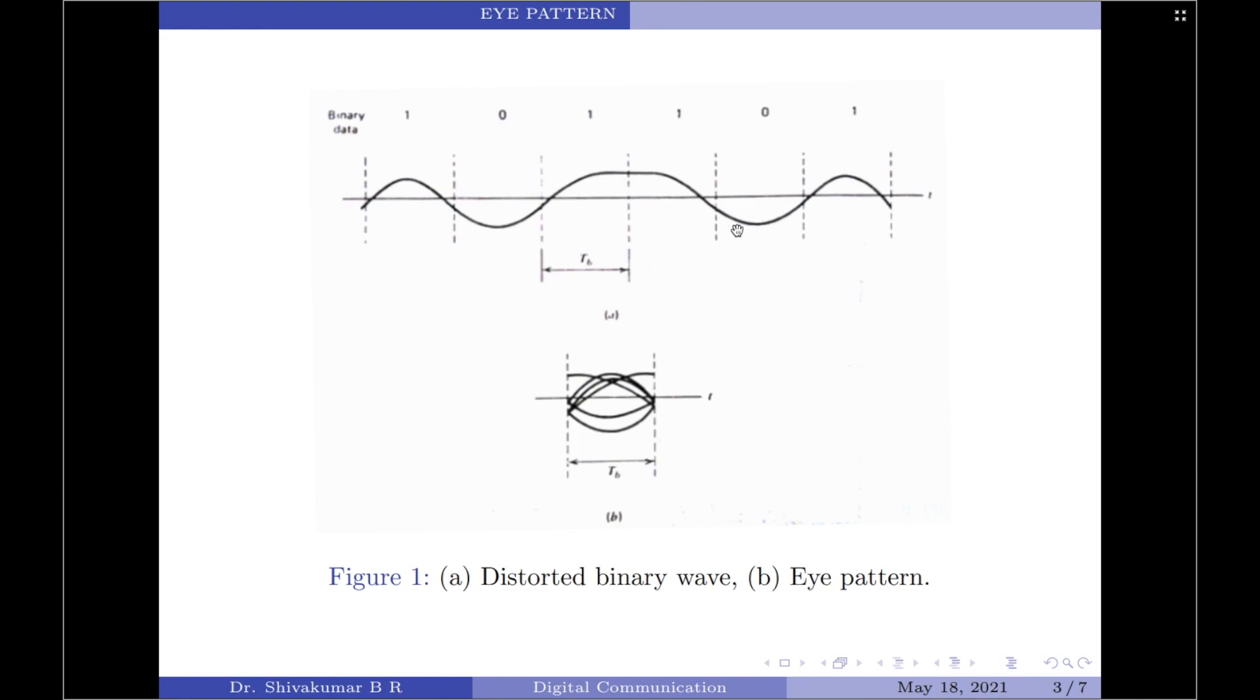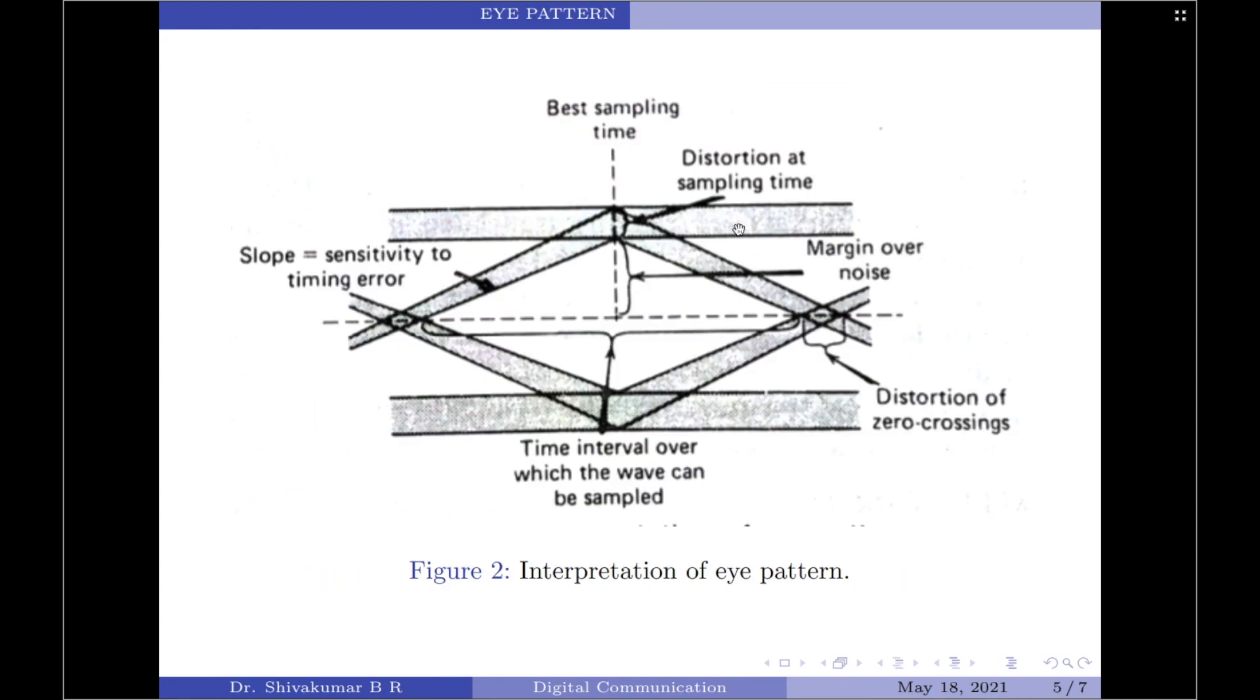We in fact have a better diagram for the eye pattern here and let us now interpret the eye pattern by studying some of the important properties of it. Note that the interior region of the eye pattern is called as an eye opening.